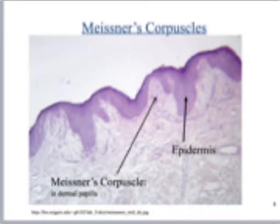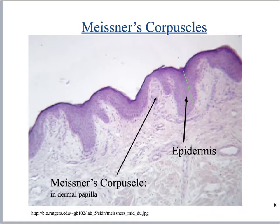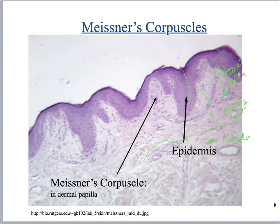Here's a slide of a Meissner's corpuscle. We've got the epidermis, and the papillary region right here. About here I can see the shift into thicker collagen, so this is going to be the reticular layer with dense irregular CT, and this is going to be the papillary layer with areolar CT. These things right here are the dermal papillae — here's one, here's another. In this dermal papilla I can see this thing that goes back and forth kind of like a ladder — that's your Meissner's corpuscle.